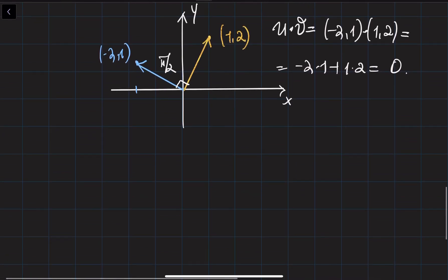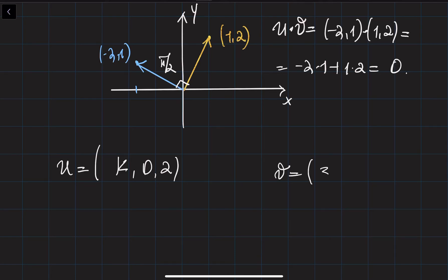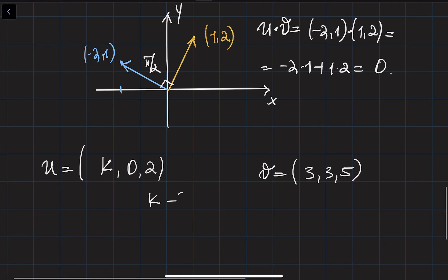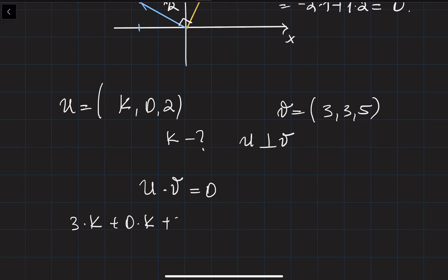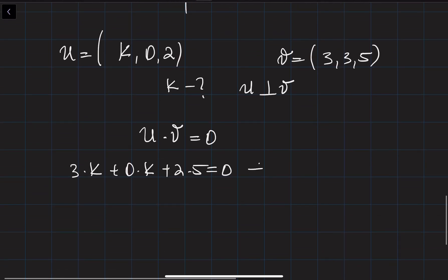Sometimes you need to deal with equations like: given vector u = (k, 0, 2) and vector v = (3, 3, 5), find the value of k such that u and v are perpendicular. You compute the scalar product and set it equal to 0. So u dot v = 3k + 0·3 + 2·5 = 3k + 10 = 0. From here, k equals -10/3. For this value of k, the two vectors are perpendicular.